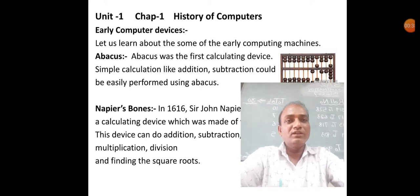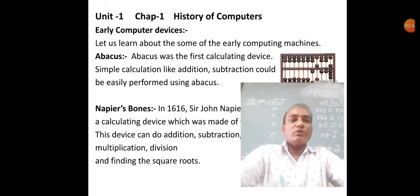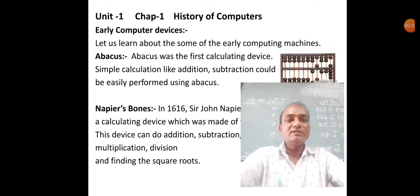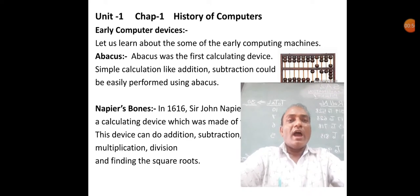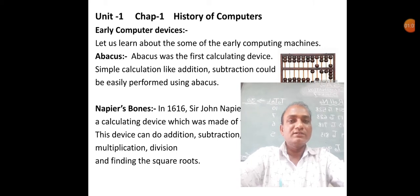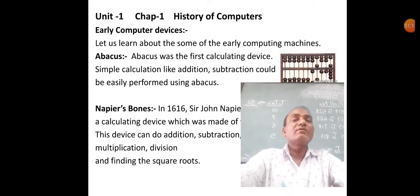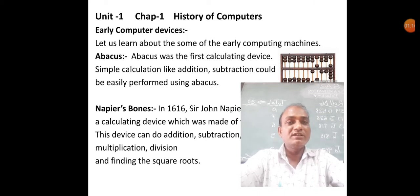First, we start with early computer devices. Let us learn about some of the early computing machines. The first early computing device is the Abacus. Abacus was the first calculating device. Simple calculations like addition and subtraction could be easily performed using the Abacus — it was essentially the first calculator or computer device.